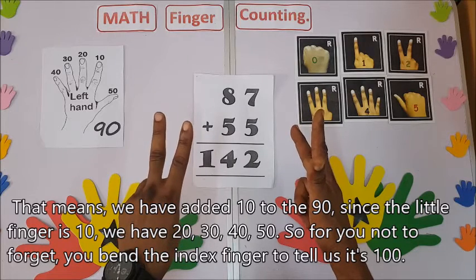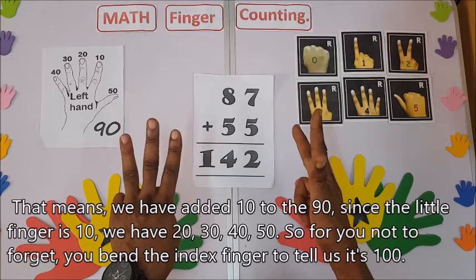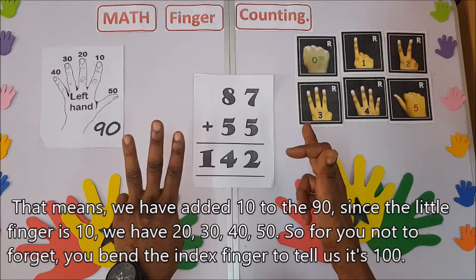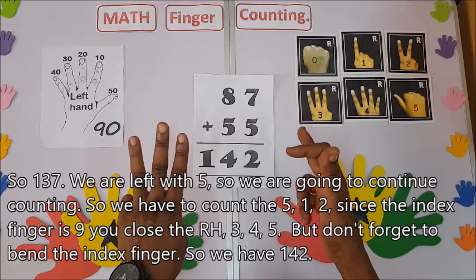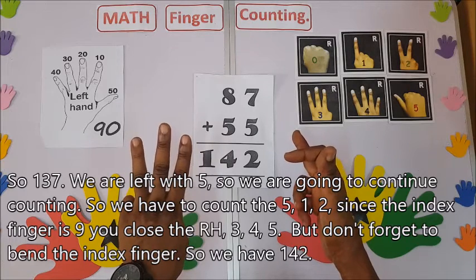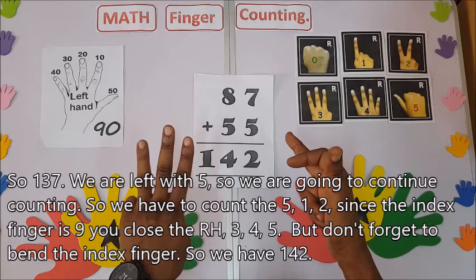40, 50. So right now, for you not to forget, you bend this one back to tell us it's 100. You are within 100, so 100. This one, 137. We are left with five, so we're going to continue.